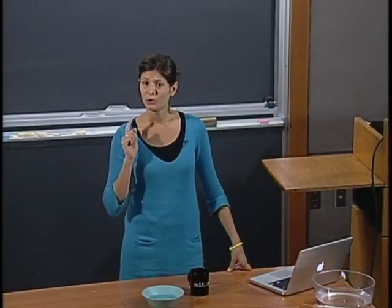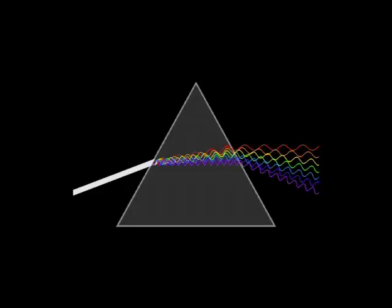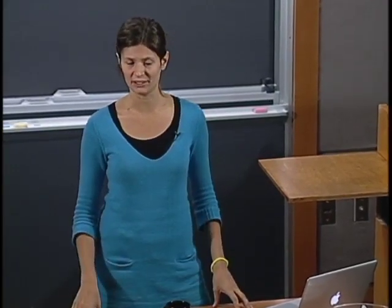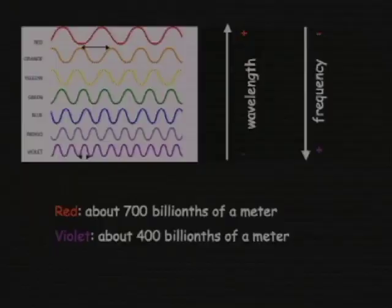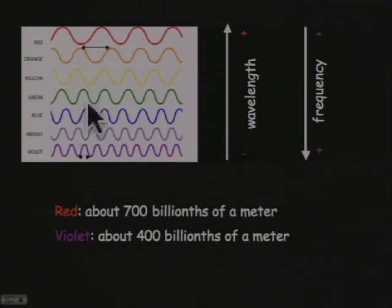Well done! You decomposed light. Indeed, white light - what we call usually the normal light - is composed actually by all the different colors. But what makes these colors, these waves different? This is the wavelength. The wavelength of the red light is larger than the wavelength of the violet light, and the other colors have wavelengths in between.